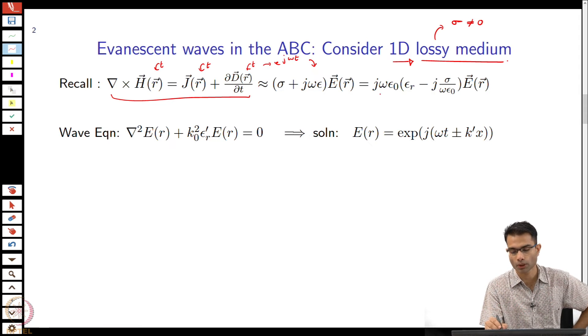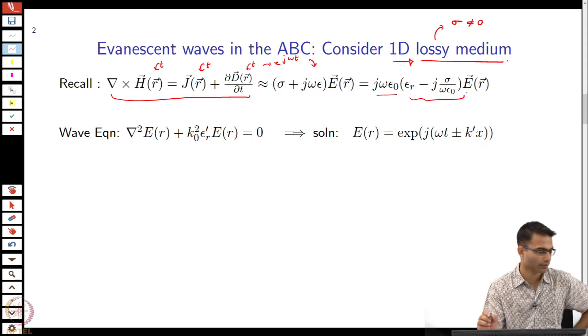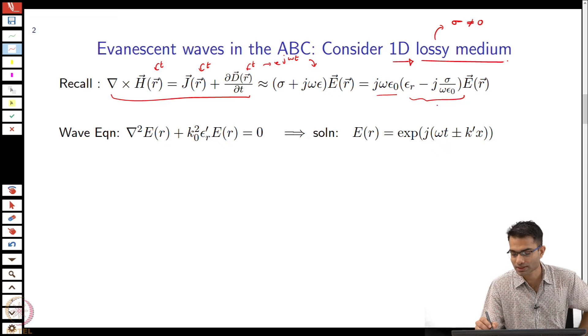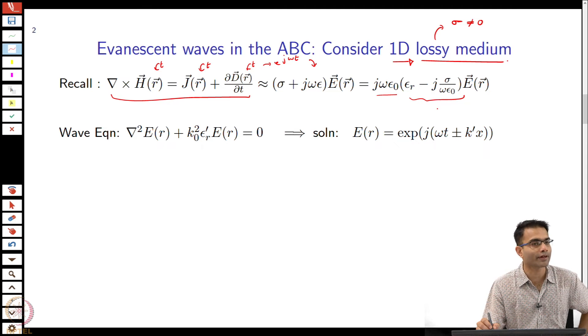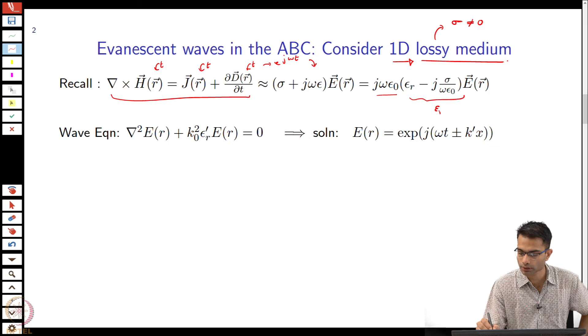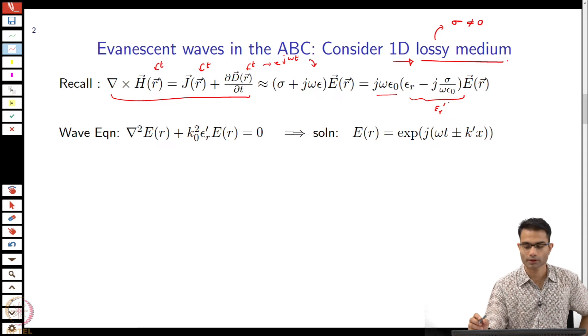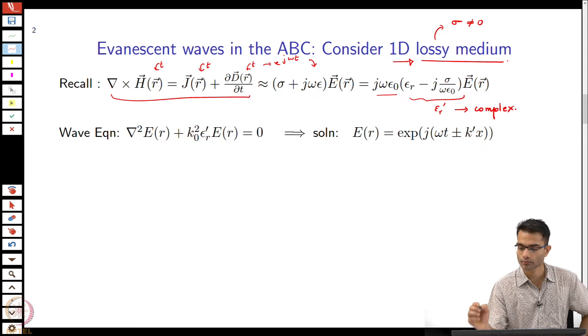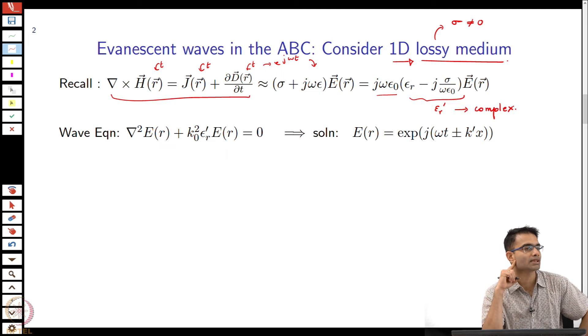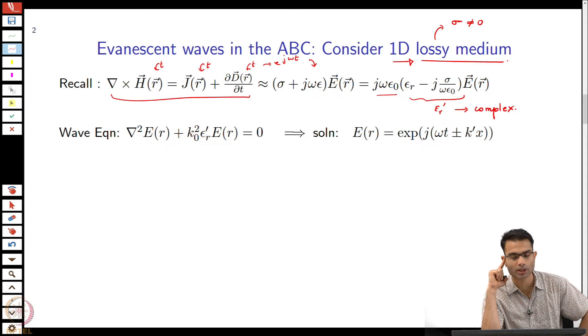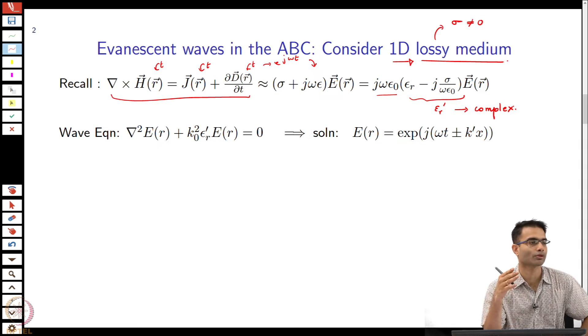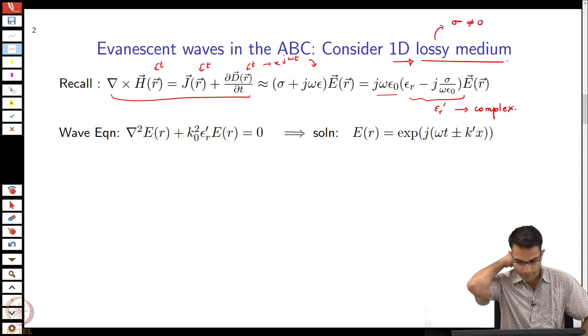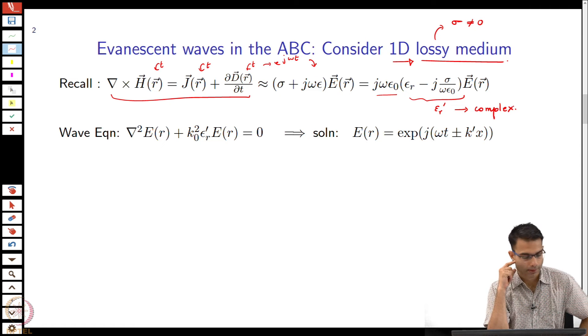All of these equations should have an e to the j omega t time dependence and then we are doing e to the j omega t approximation. That gives us this which all of us have seen during undergraduate courses and then the standard procedure from here is to try to extract effective permittivity. So I pull out a j omega epsilon naught and whatever is left inside is in this bracket. This term looks like an effective relative permittivity, so I will call that epsilon r prime, which is obviously complex.